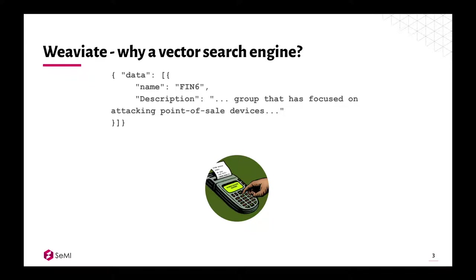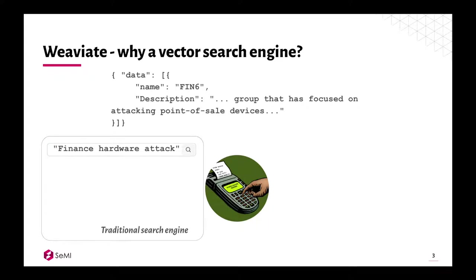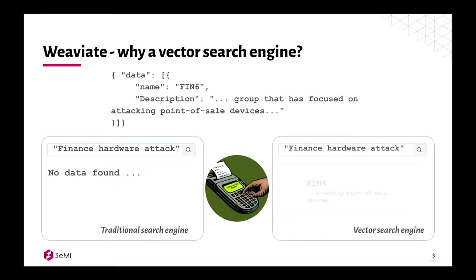Let's look at a data object representing a cybersecurity threat group — in this case FIN6, a group that focused on attacking point-of-sale devices. If we store this in a traditional search engine and query for 'finance hardware attacks', it won't find anything because the exact keywords don't match. However, in a vector search engine like Weaviate it will return FIN6, because it understands the relation between finance, hardware, and attack in the context of a group targeting point-of-sale devices.